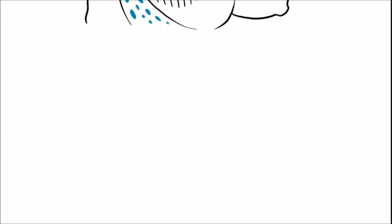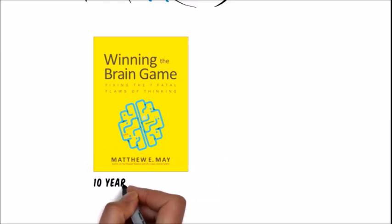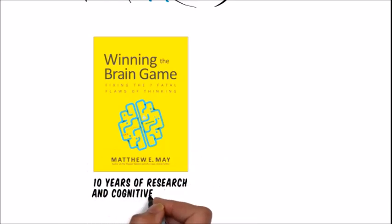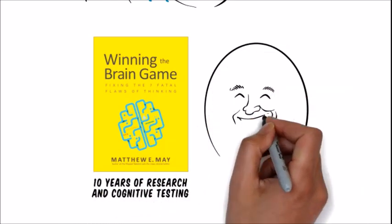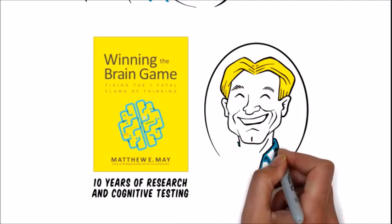In his new book, Winning the Brain Game, based on 10 years of research and cognitive testing, award-winning author, public speaker, coach, and thought leader on strategy and innovation, Matthew E. May, has identified seven fatal flaws in our thinking.